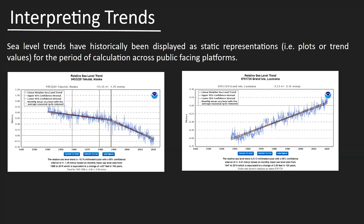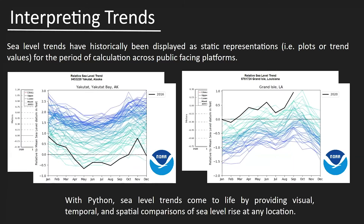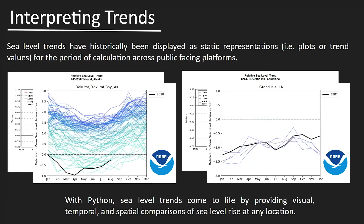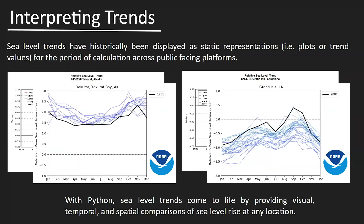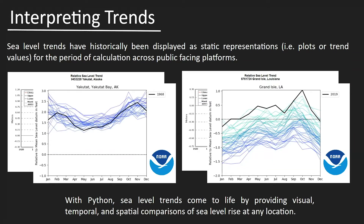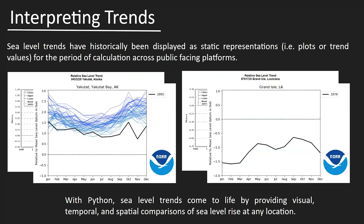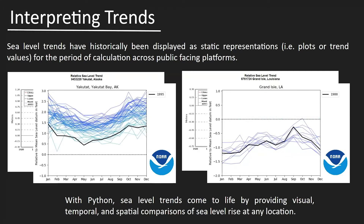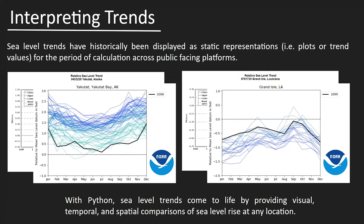Historically, these data have been represented as static graphics for the period of calculation. Creating these GIFs allows for historical data to be plotted over a color gradient with the black line designating each year's progression. Animations like these facilitate easier interpretation of sea-level trends in an aesthetically pleasing way by not only showing the progression year-to-year, but showing the variability of each month in a given year.